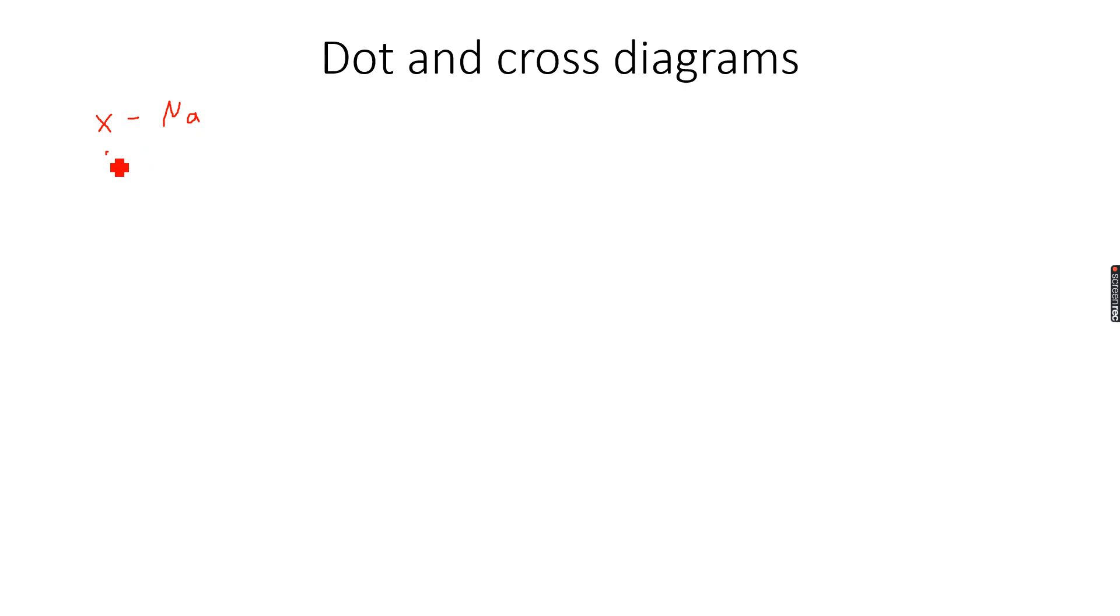So first we have to make square brackets. Then we write Na in the middle and we only draw the outermost shell of any atom - remember only the outermost shell.